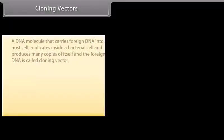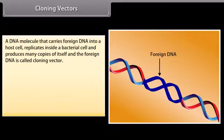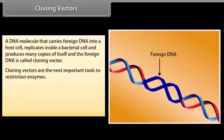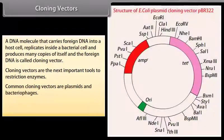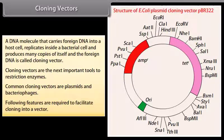A DNA molecule that carries foreign DNA into a host cell replicates inside a bacterial cell and produces many copies of itself and the foreign DNA is called cloning vector. Cloning vectors are the next important tools to restriction enzymes. Common cloning vectors are plasmids and bacteriophages. Following features are required to facilitate cloning into a vector.